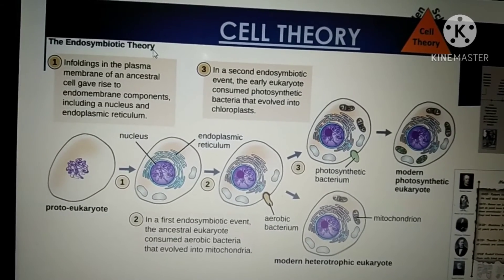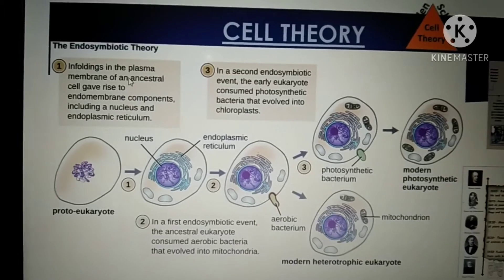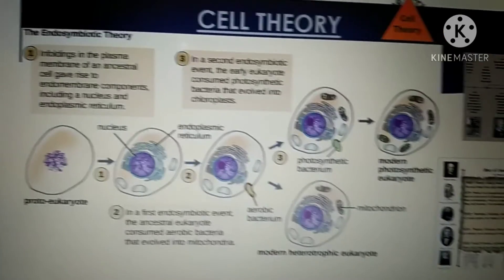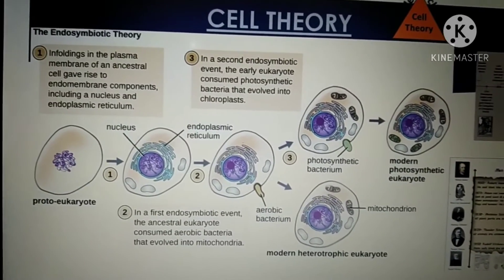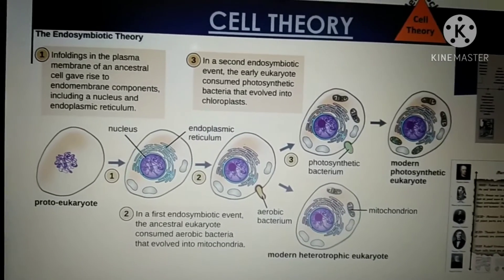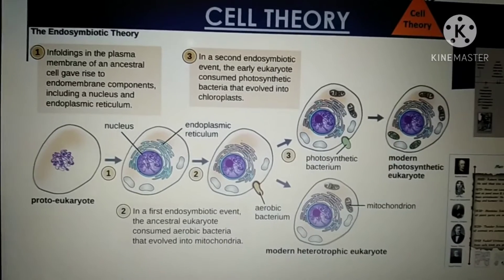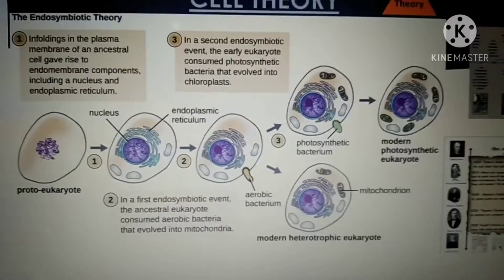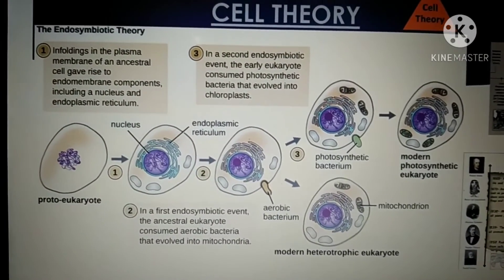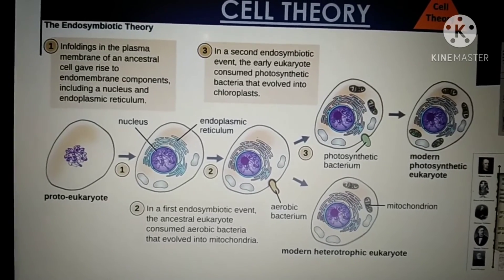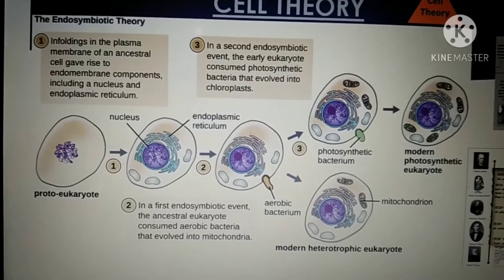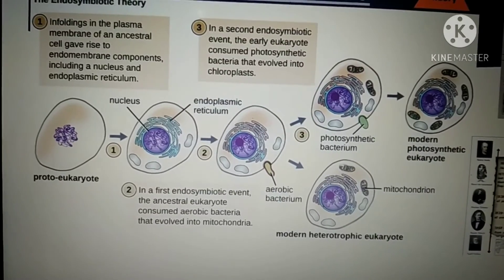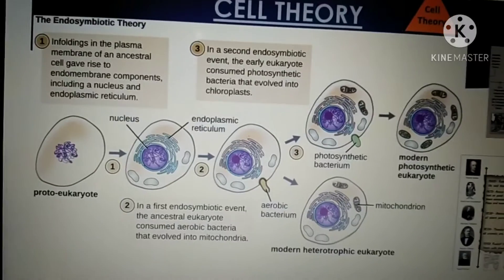The endosymbiotic theory explains how organelles may have formed. Infolding of the plasma membrane of an ancestral cell gave rise to endomembrane components, including the nucleus and endoplasmic reticulum. In a second endosymbiotic event, ancestral eukaryotes consumed aerobic bacteria that eventually evolved into mitochondria. This theory is mainly related to the formation of organelles and the endomembrane system inside the cell.